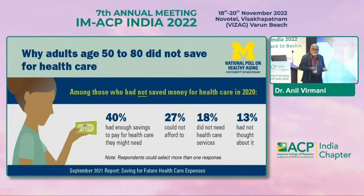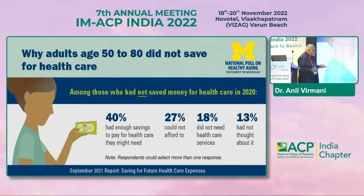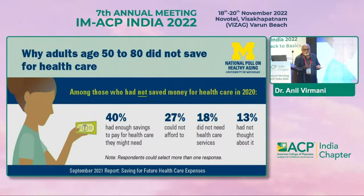When people get old — over the age of 50 — they start getting ill. A study found: 40% said they have enough savings to pay for healthcare they might need; 27% said they can't afford healthcare; 18% did not care about healthcare; and 13% never thought they would get ill. This is the current situation.